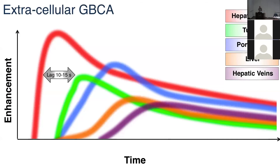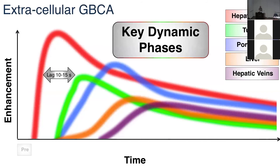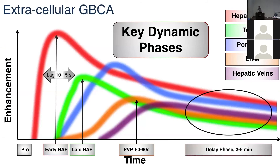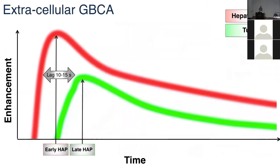The key dynamic phases are: pre-contrast, early arterial phase, late arterial phase, portal venous phase when the liver reaches peak enhancement, and the delayed phase at three to five minutes when everything de-enhances. The early arterial phase is when the hepatic artery is at peak; the late arterial phase is when the tumor is at peak. If you want to image a tumor, you want to image in the late arterial phase, not the early arterial phase.